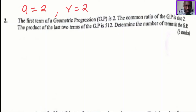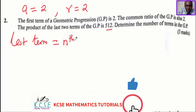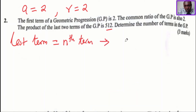The product of the last two terms of the GP is 512. Now how are we going to write the last term? The last term of the GP is the nth term, and this is how we write the nth term. The nth term of a geometric progression is written as AR raised to power n minus 1.